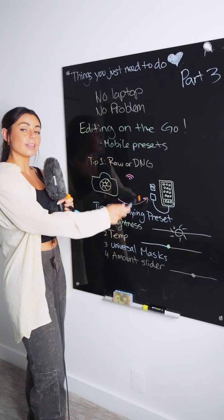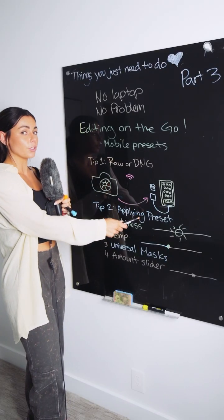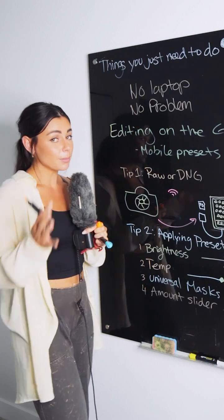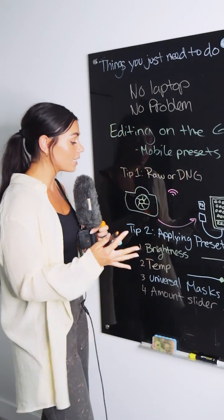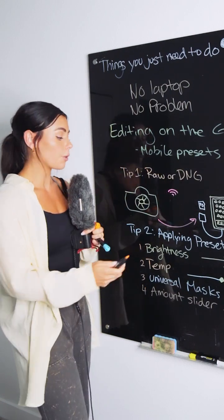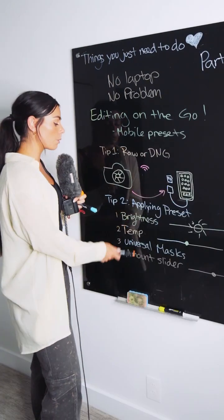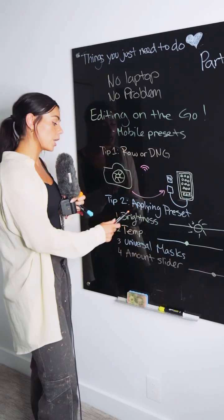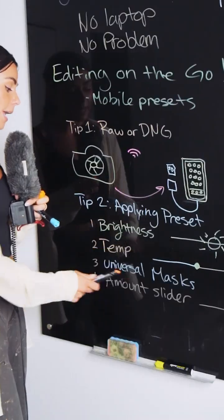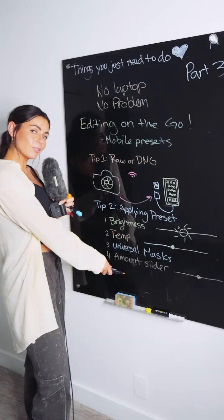Tip number two: the things that you should check after you apply a preset. 90% of the time, if a preset doesn't look good on a photo, you need to adjust one or more of these things: brightness, temperature, masks, or the amount slider.